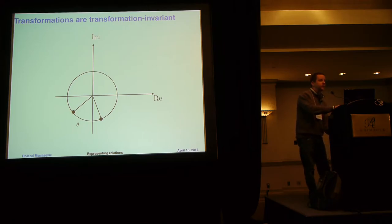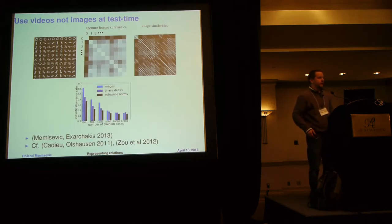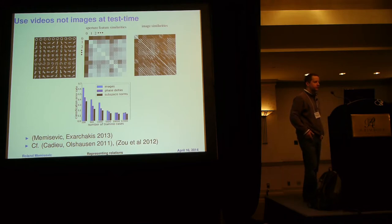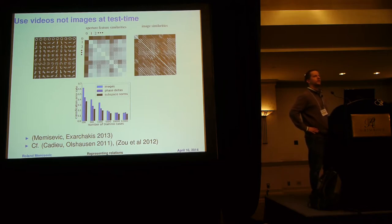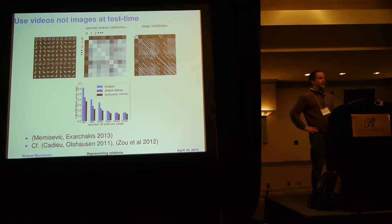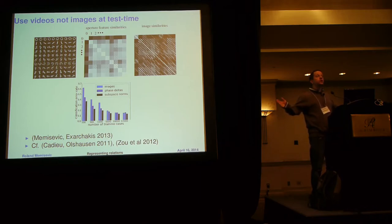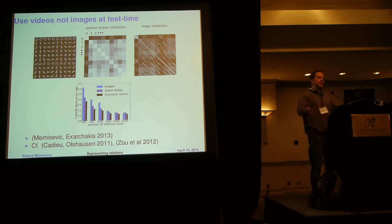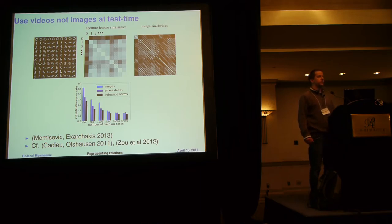This immediately gives us a way to get invariant features — for free. If you want features invariant to some transformation, use videos for training, so the mapping units encode those phase-angle deltas. Then use videos for testing as well, because that encoding of angle deltas is naturally invariant to the pose of the objects. There's nothing additional you have to do to get invariance — just train on video and let the model figure out what the transformations are. At test time, throw it another video and it will encode those transformations in a pose-invariant way.